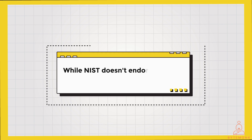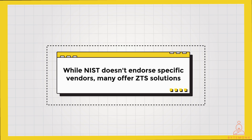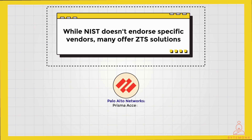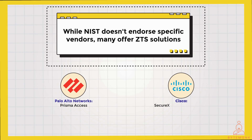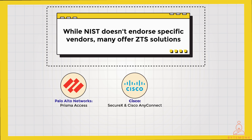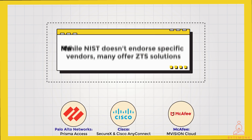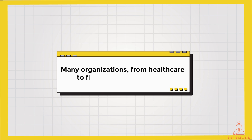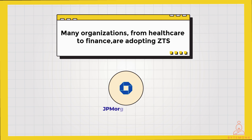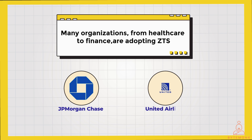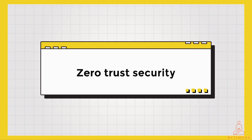While NIST doesn't endorse specific vendors, many offer ZTS solutions — for example, Palo Alto Networks Prisma Access, Cisco SecureX, Cisco AnyConnect, and McAfee MVISION Cloud. Many organizations across healthcare and finance are adopting ZTS. JPMorgan Chase implemented ZTS to secure access to cloud applications for thousands of employees, and United Airlines uses ZTS to restrict access to sensitive aviation data on employee devices.